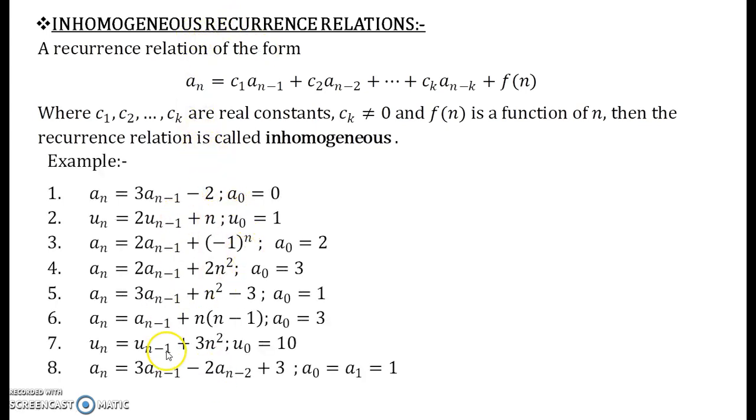I have given you over here plenty of examples so that you get familiar with what is f of n. For the first one you can see an is equal to 3 an-1 minus 2. Now you compare it with the definition over here. If you compare it with this definition, f of n is minus 2, and this ck will be c1 which is 3, and this a0 equal to 0 is our initial condition. For the second equation, the function f of n is n.